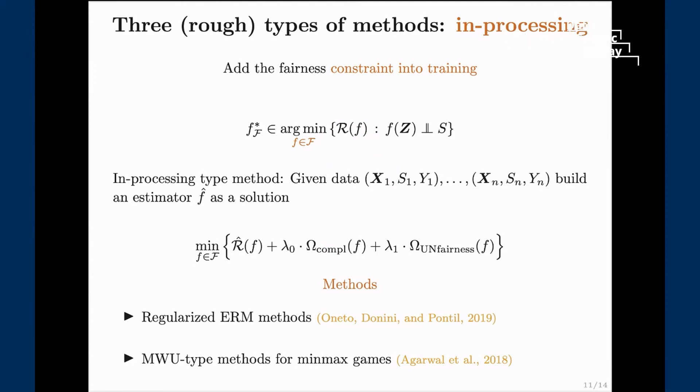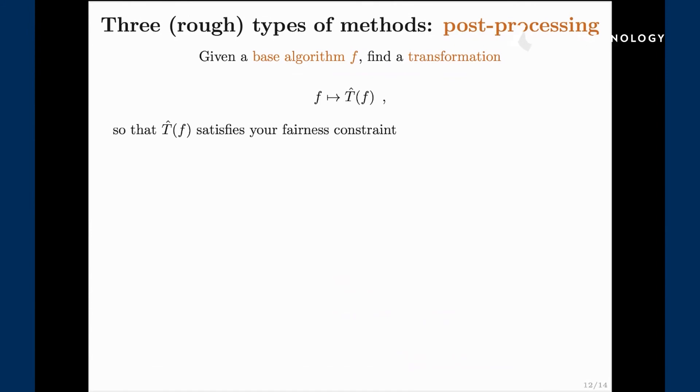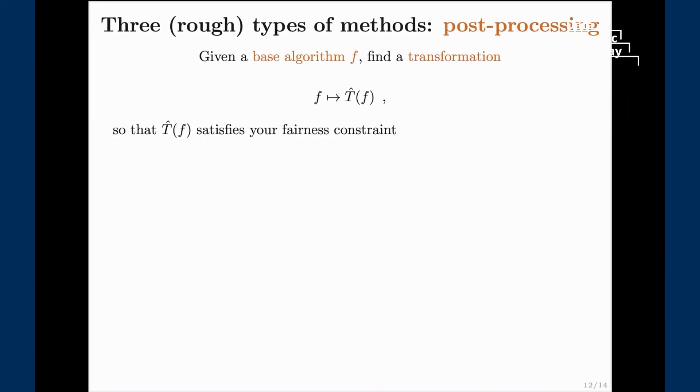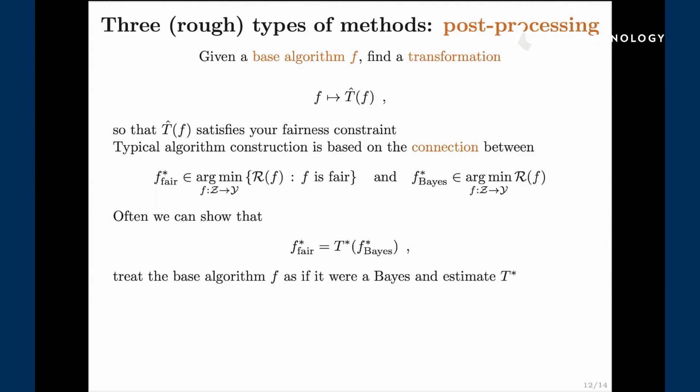Finally, post-processing. It's quite a different way of seeing the problem. In that case we are given some base algorithm f and we think of this algorithm as something that we are currently using in production. Let's say we were not informed about fairness issues and right now we became informed. We're asking ourselves can we still use our base algorithm but somehow try to modify it a little bit in order to gain some fairness properties? In post-processing you're trying to find some sort of a transformation of your base algorithm which eventually makes your current method fair. From a theoretical perspective it's somehow based on the relation between two prediction functions.